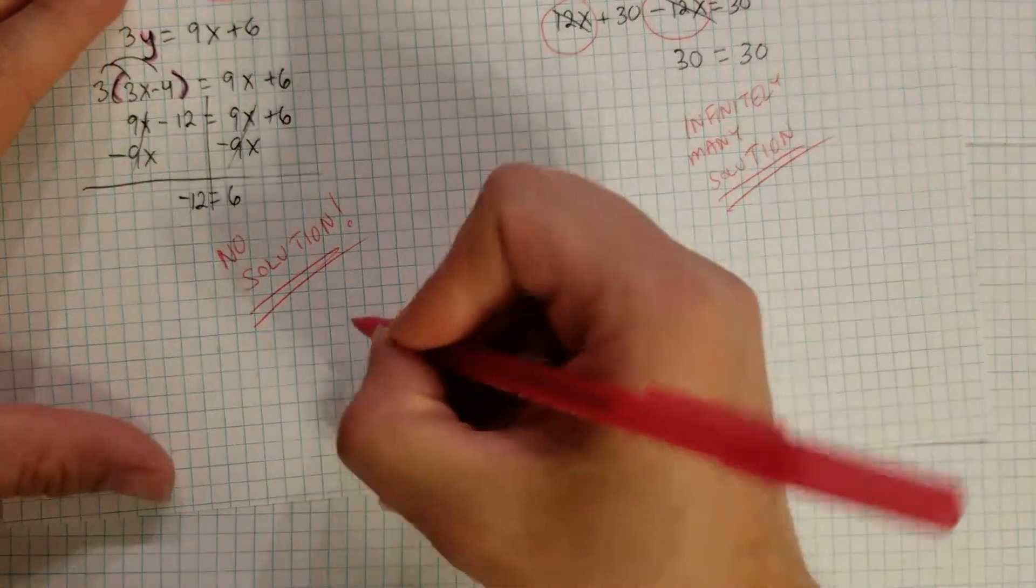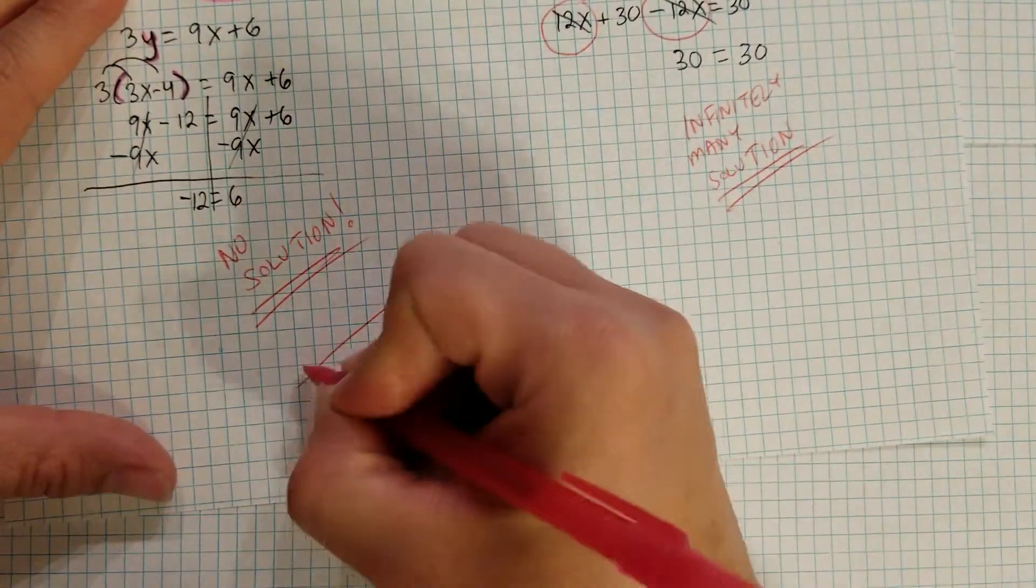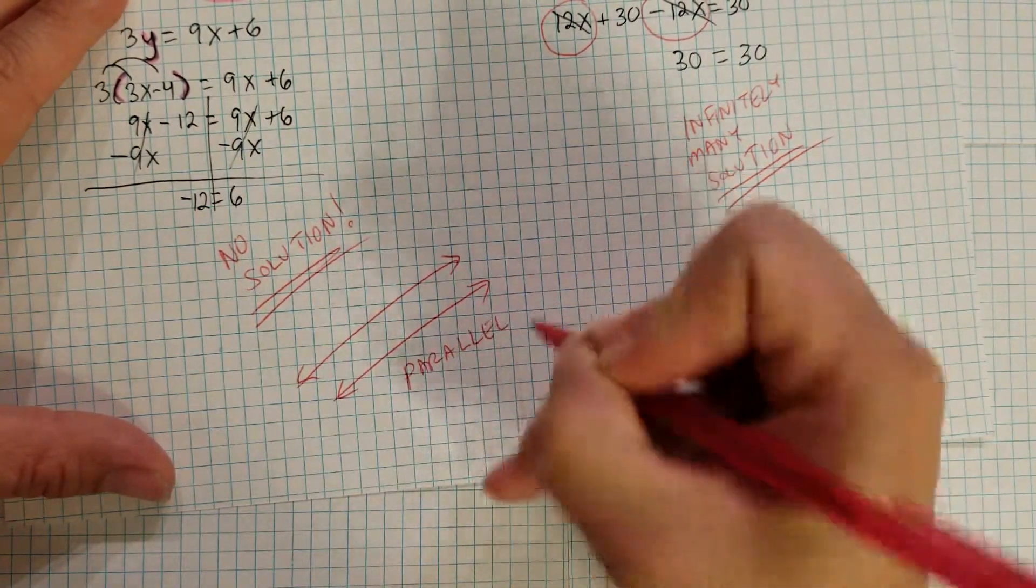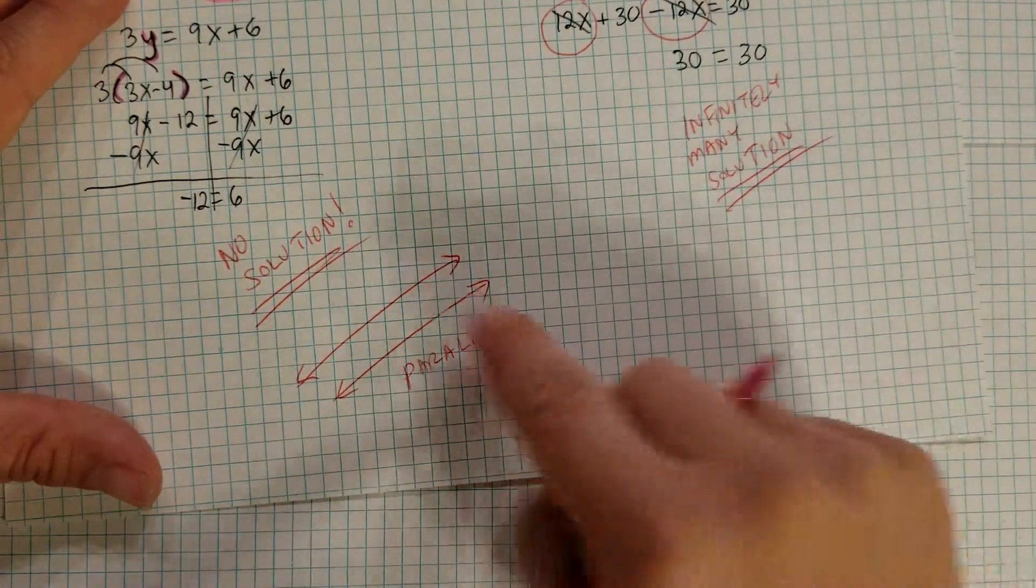So if you think about graphing a line, no solution means two lines that never cross, meaning that they're parallel. They're never going to cross. Therefore, no solution. The solution is the point where they cross.